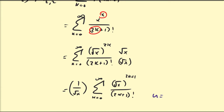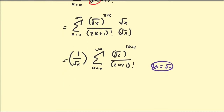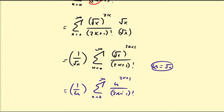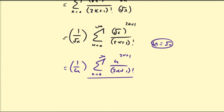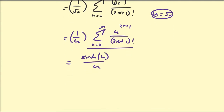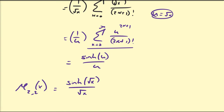Letting u = √x, this becomes 1/u times the sum from k=0 to infinity of u^(2k+1) over (2k+1)!. This is clearly an odd power series — it's the hyperbolic sine function. So this equals sinh(u)/u, meaning E_{2,2}(x) = sinh(√x)/√x.